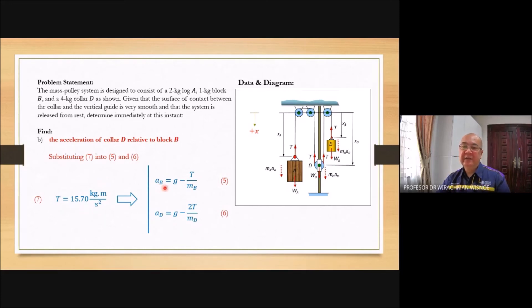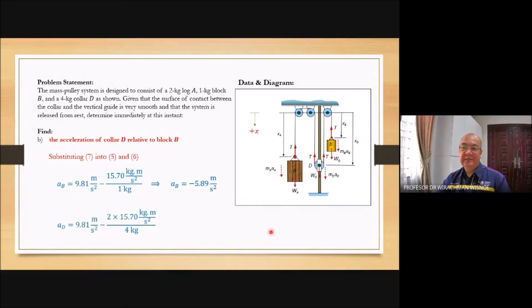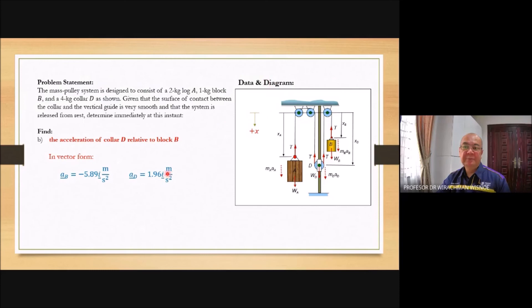From here you can calculate the value of AB and AD. Put the values. That is AB. You put the values for AD. That is AD. So you have these two in vector form. You see I just put. Negative means going up. Positive means going down.